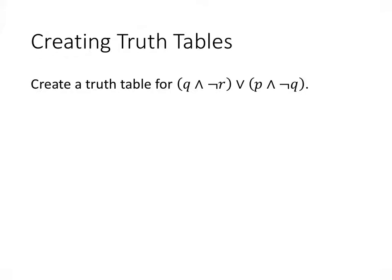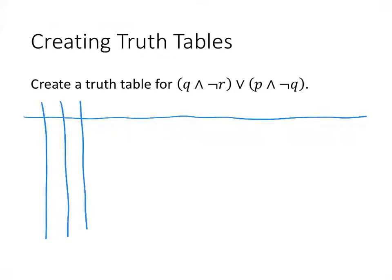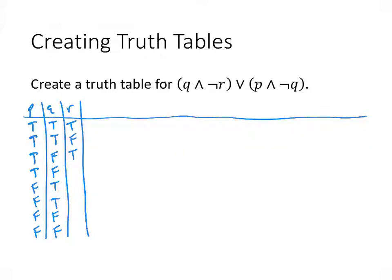Finally, we practice creating a truth table for a compound statement. Truth tables help us figure out in which situations a statement is true or false. Our compound statement has three variables — P, Q, and R — so the first three columns are P, Q, and R, filled in with eight combinations of trues and falses. P is true for the first four rows and false for the last four; Q alternates two at a time (TT FF TT FF); and R alternates every row (T F T F T F T F).